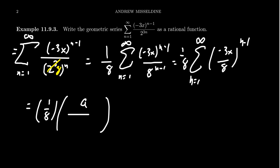we get a over 1 minus r. The r is just the constant ratio. What is the thing that we're taking powers of? And that's this guy. This is our r value. And so we're going to see we have a negative 3x over 8 as our r.